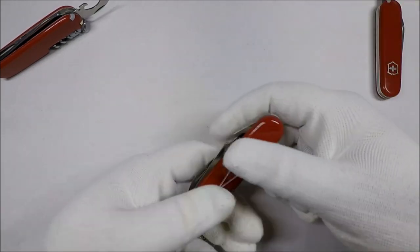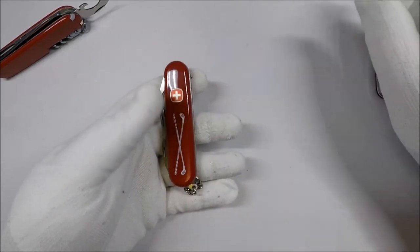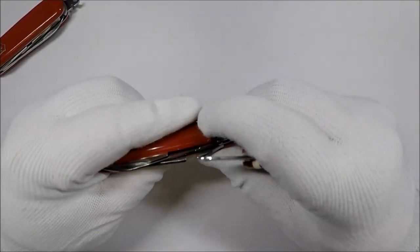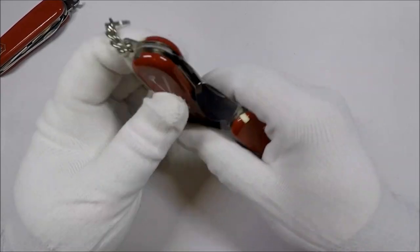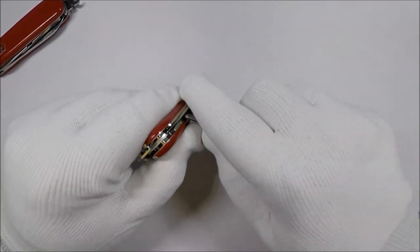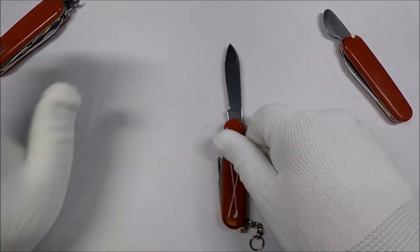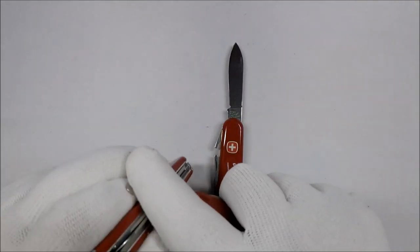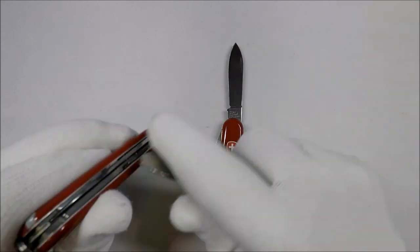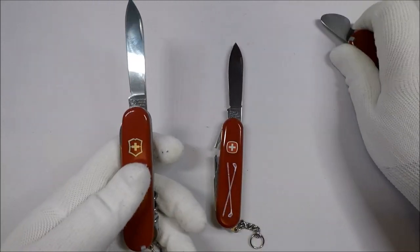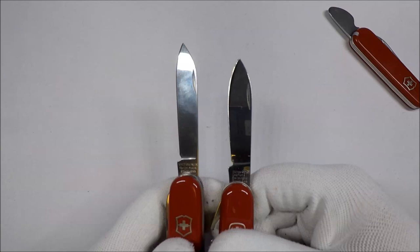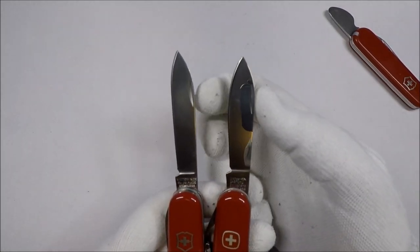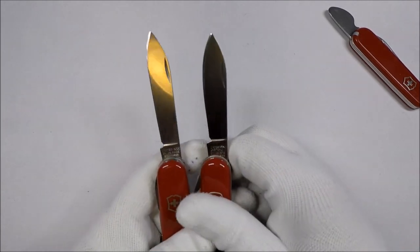Oh, by the way, this is 85mm versus the traditional 91. You got the Wenger blade versus the standard Victorinox blade. Victorinox blades are a little bit longer. You can see that the Wenger blade is a little bit wider right here versus the Victorinox.